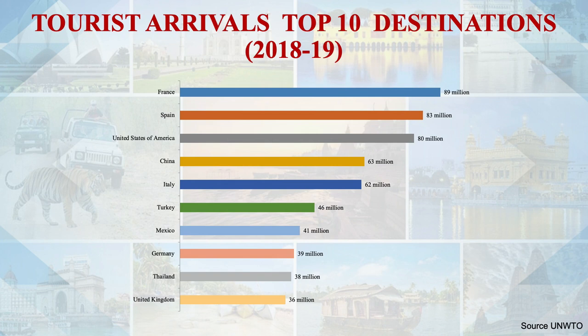Looking at the top 10 countries, five of them — France, Spain, Italy, Germany, and the United Kingdom — are in Europe, with a combined footfall of around 309 million tourists. Turkey bridges Europe with the Middle East. Europe is the most visited tourism region in the world. Apart from being the top receiving region, Europe also generates the most visitors, accounting for about 48% of total outbound visitors worldwide. Asia and the Pacific generates about 26%, followed by the Americas. Africa and the Middle East are each at 3%.